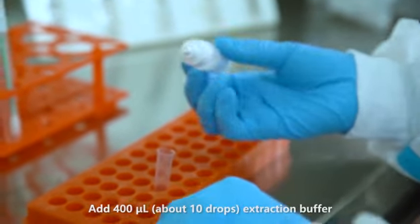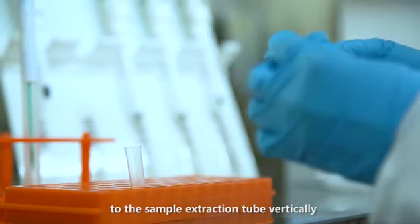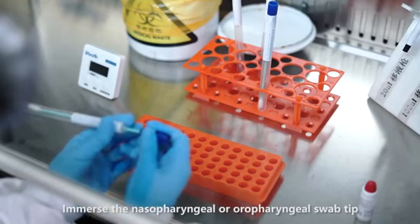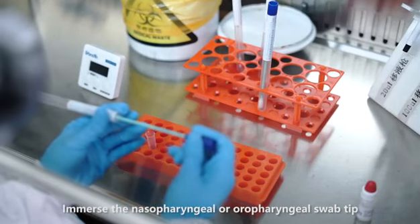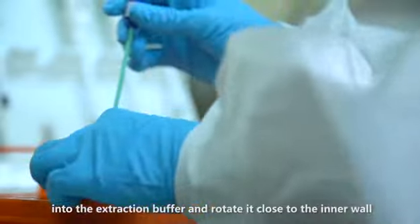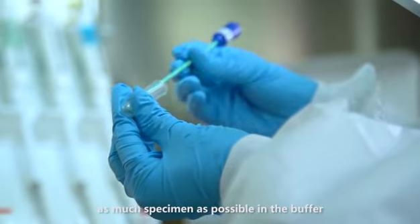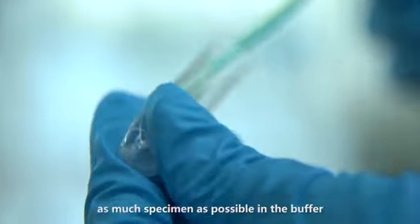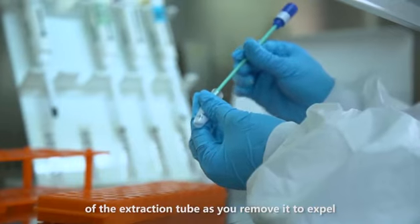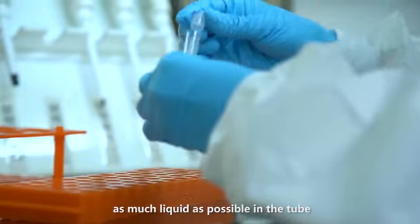Add 400 microliters, about 10 drops, of extraction buffer to the sample extraction tube vertically. Immerse the nasopharyngeal or oral pharyngeal swab tip into the extraction buffer and rotate close to the inner wall of the tube for about 10 times to dissolve as much specimen as possible in the buffer. Squeeze the swab head against the inner wall of the extraction tube as you remove it to expel as much liquid as possible in the tube.